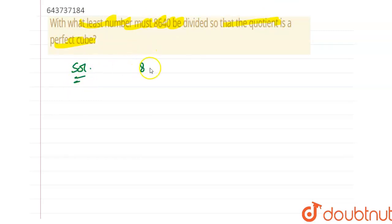To find out the answer we have to write 8640 into product of its prime factors. So we have to do the prime factorization. Let's start doing that.